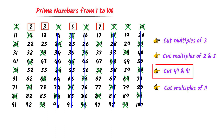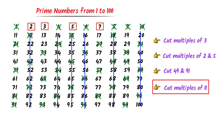According to Step 3, cut 49 and 91. Lastly, according to Step 4, cut the multiples of 11 diagonally — cutting numbers at positions 1, 2, 3, 4, 5, 6, 7, 8, 9 diagonally across the grid.